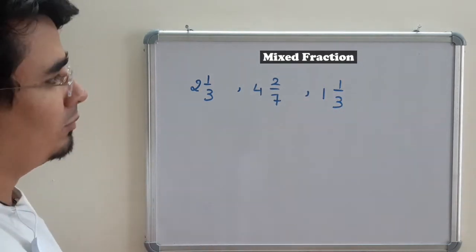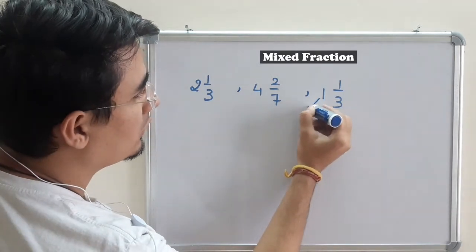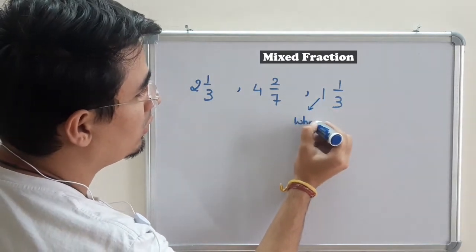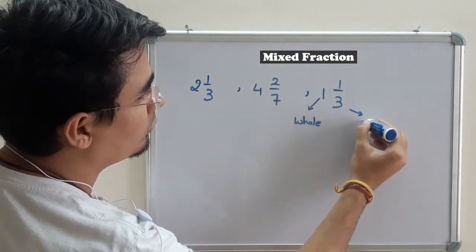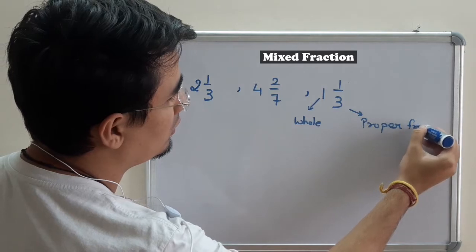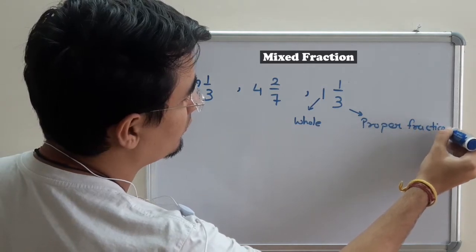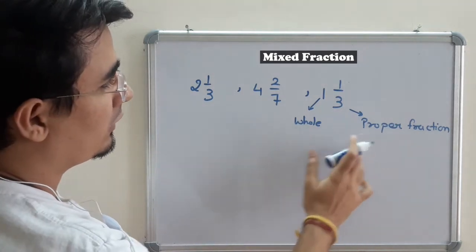These are examples of mixed fractions. The 2 is the whole, and 1/3 is the proper fraction. So this is nothing but a whole and a proper fraction.